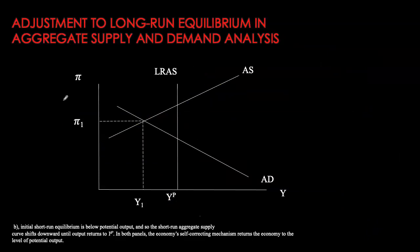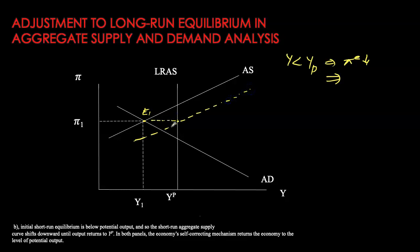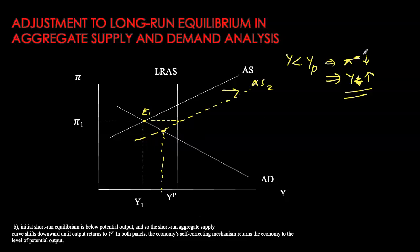Now let's look at a recessionary output gap. The initial equilibrium is at the intersection of AD and short-run AS at E1, where inflation is at pi 1 and GDP is at Y1, which is lower than potential. With output below potential there is slack in the labor market — workers are willing to accept smaller wage increases. This causes inflation expectations to go down, and as expectations fall, the short-run AS shifts down to reflect this lower expected inflation. As it shifts down, production increases and the equilibrium GDP in the short run rises, reducing the output gap.